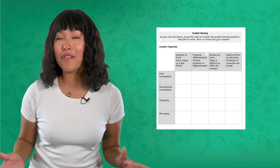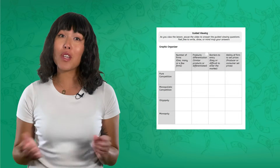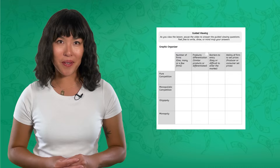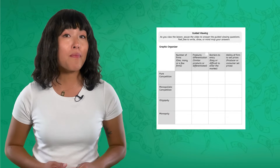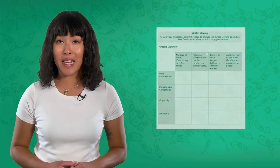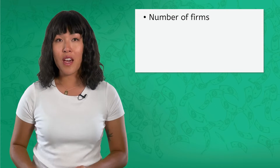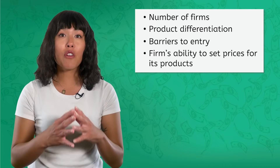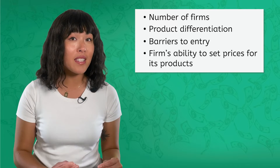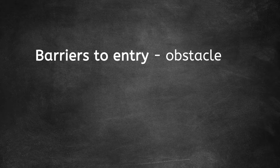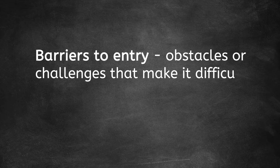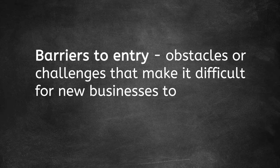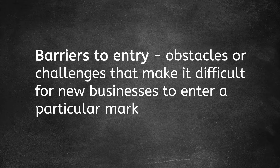In your PDF, you'll find a graphic organizer to help take notes about the different types of competition. We're going to examine these from most competitive to the least competitive. We're going to discuss them in terms of the number of firms, product differentiation, barriers to entry, and a firm's ability to set prices for its products. The term barriers to entry refers to obstacles or challenges that make it difficult for new businesses to enter a particular market or industry.